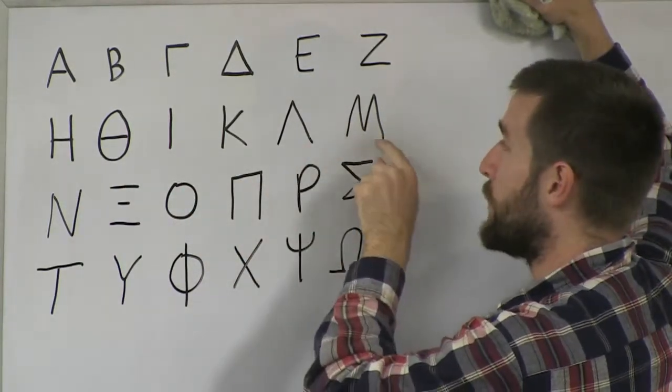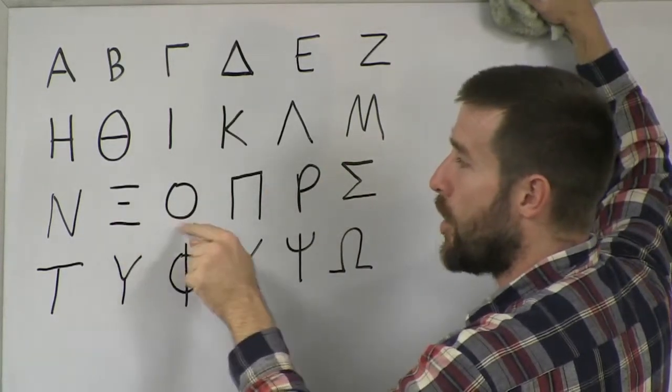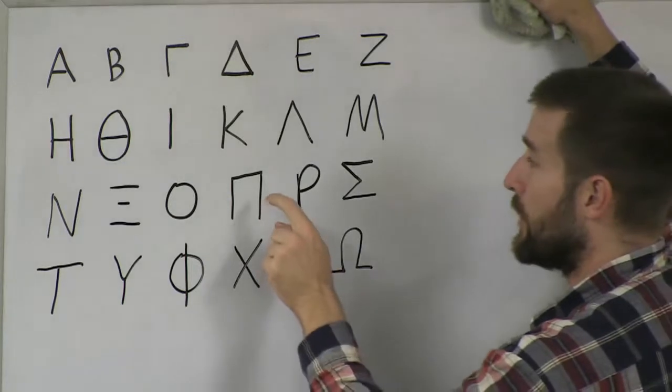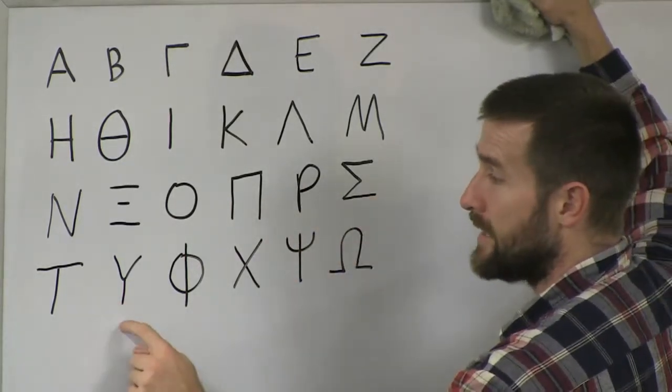And then I have another little rhyme that goes Mi, Ni, Xi, Omicron, Pi. Then we have the next four that I group together. Rho, Sigma, Tau, Upsilon.